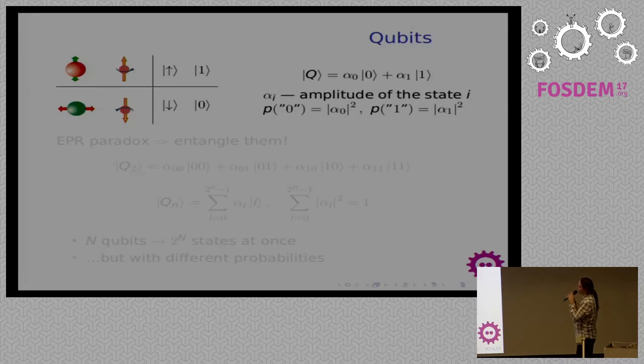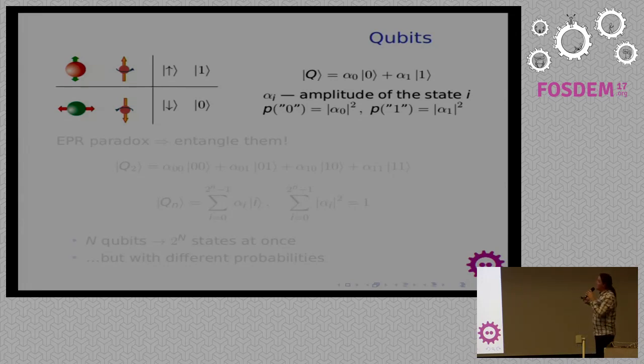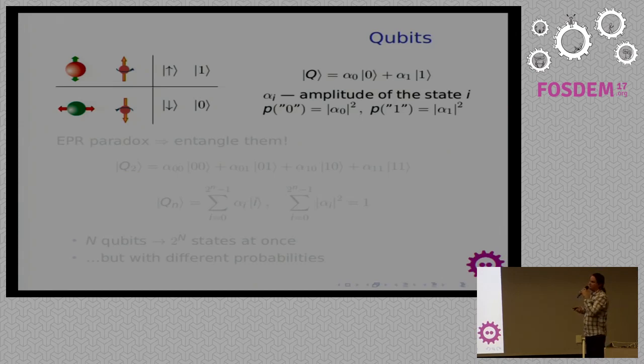We can take not only spin, but for example, photon particle which is polarized in different directions, zero polarization or 90 degrees polarization. Polarization is just an angle between electrical and magnetic fields. So if we have such particle, I will consider spin for the next considerations because spin is easier to understand here. And it can be in state one or in state zero.